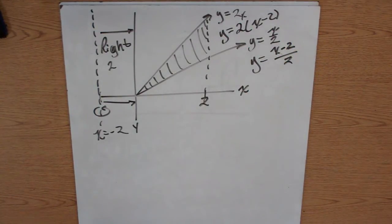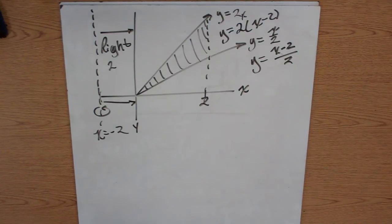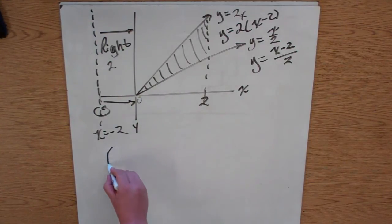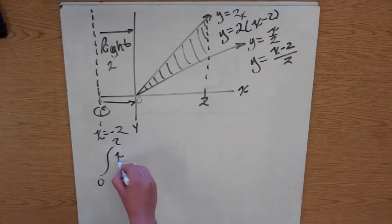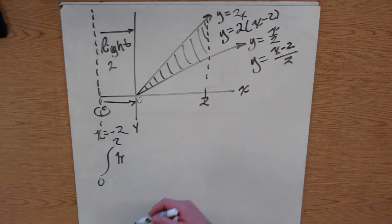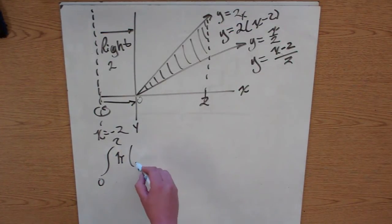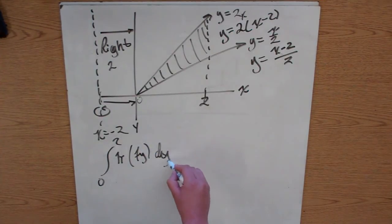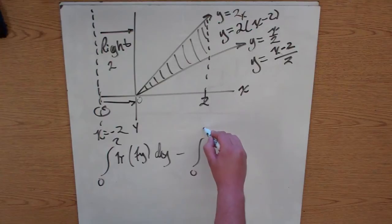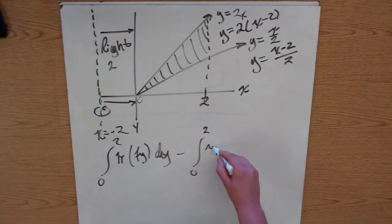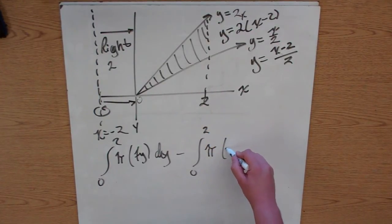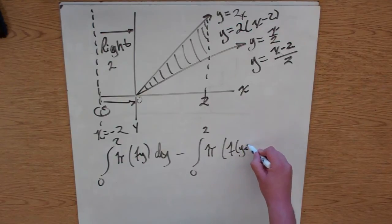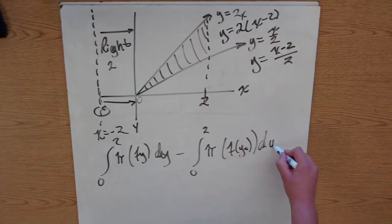Then again, you would still do the same thing from 0 to 2. You would still do the integration the same. So you'd still do from 0 to 2 pi. But now you have to solve it for y. So you put f of y dy minus from 0 to 2 pi times your inner radius. I'm going to call it f of y sub 2 dy.